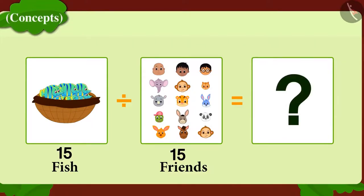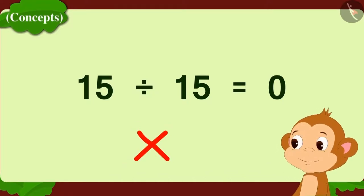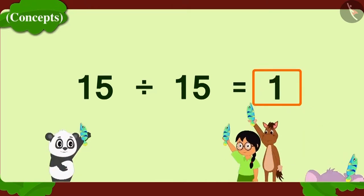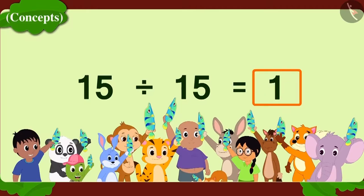Oh, Babban has written it wrong. Whenever we divide a number by itself, the answer will always be one, as every person will get one object each.